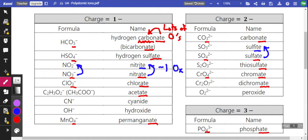Sulfate is SO4 with a negative two charge. Sulfite is SO3 with a negative two charge. So again, we're just losing one oxygen from that.